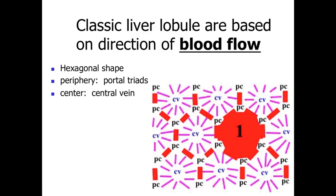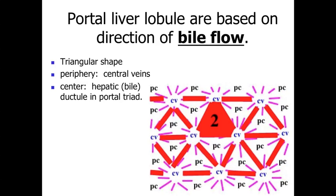Another way of looking at the same cells and overall organization is in terms of bile flow—the portal liver lobules. With bile flow, instead of the central veins being the central point, we look at the central veins at the periphery and draw a line to connect them, giving a triangular structure with a portal canal at the center. For the portal liver lobule, we're looking at bile flow, so that central hepatic bile duct is the center of the portal triad and the center of the structure—a roughly triangular shape draining into the bile duct.